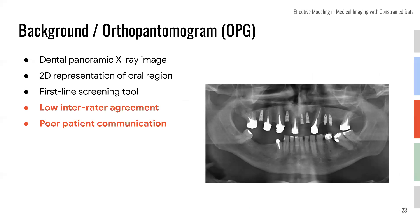You might have received multiple OPG scannings in the past. It's a machine where there's something for you to bite at the center, and once the machine starts, the scanner will rotate in a half-circular manner to scan your oral region. Instead of producing a 3D representation, it produces a 2D-compressed representation of your oral region. It's pretty fast — it can be acquired in under 10 seconds — so it's frequently used as a first-line screening tool. However, due to its nature of compressing everything into a 2D image, different objects are often overlaid on top of each other.